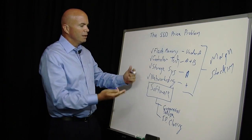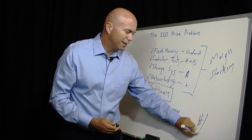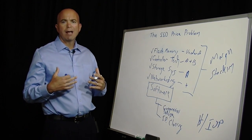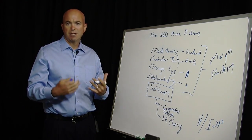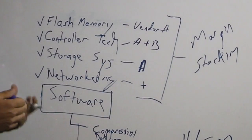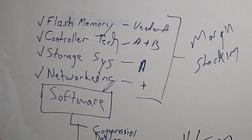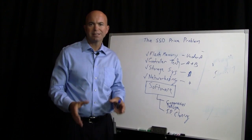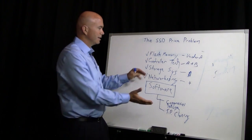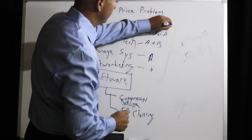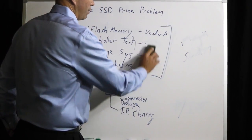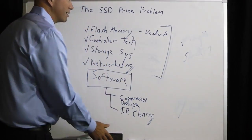We're seeing these systems being able to be justified from a dollar per IOP perspective. But what if we were able to justify it from a dollar per gigabyte perspective? That way you would get all the performance of flash-based storage without the cost. And so that's where we think the change is going to have to happen in the market today — we're going to have to see a tighter integration of this stack and essentially remove as many of these vendors as possible from the process.